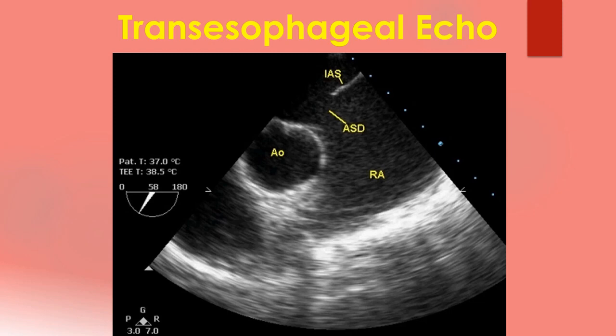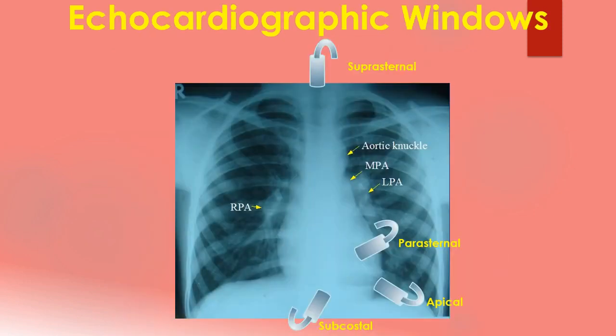Shorter distance permits the use of higher frequency transducers which give better image resolution. Higher frequency transducers have only low depth penetration and are not suitable for transthoracic echocardiography. The four common locations at which the echocardiographic transducer is placed for imaging are the parasternal, apical, subcostal and suprasternal. Parasternal views are often obtained first followed by apical, subcostal and suprasternal. A good knowledge of the anatomy of the heart is needed for interpretation of images from each view, and this becomes more difficult in complex congenital heart diseases where cardiac chamber positions and size may vary.